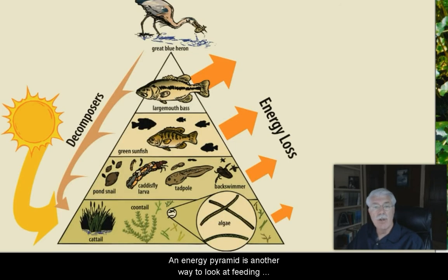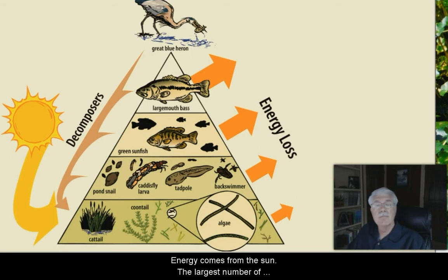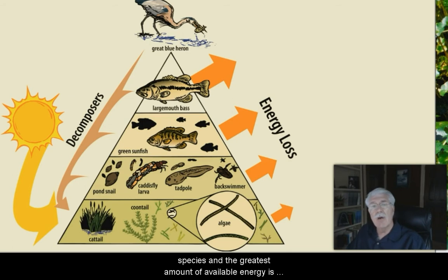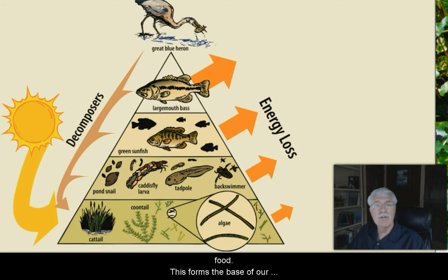An energy pyramid is another way to look at feeding relationships and energy flow through an ecosystem. Energy comes from the sun. The largest number of species and the greatest amount of available energy is in the producers that take the sun's energy and produce food. This forms the base of our energy pyramid.